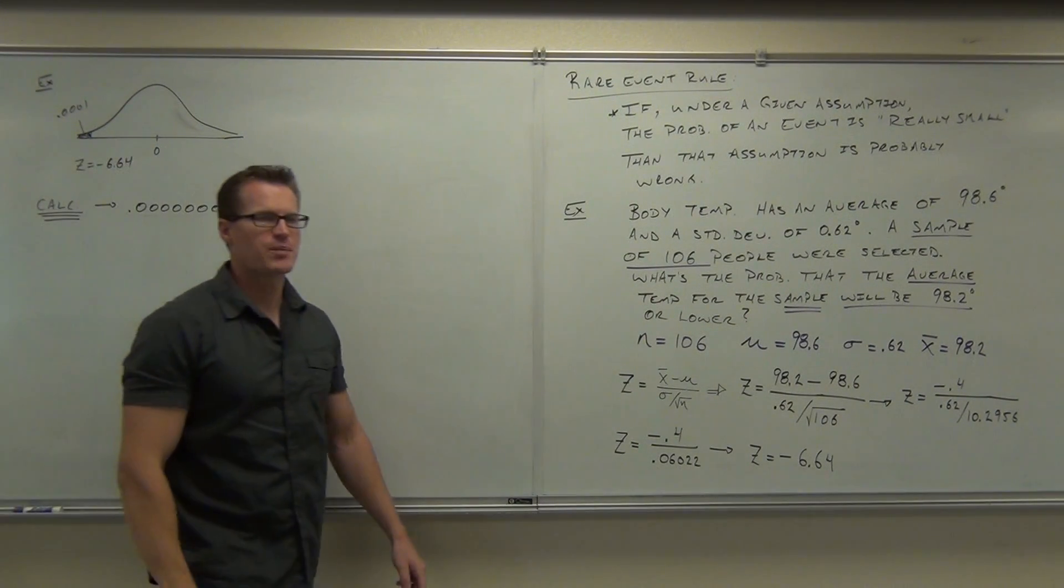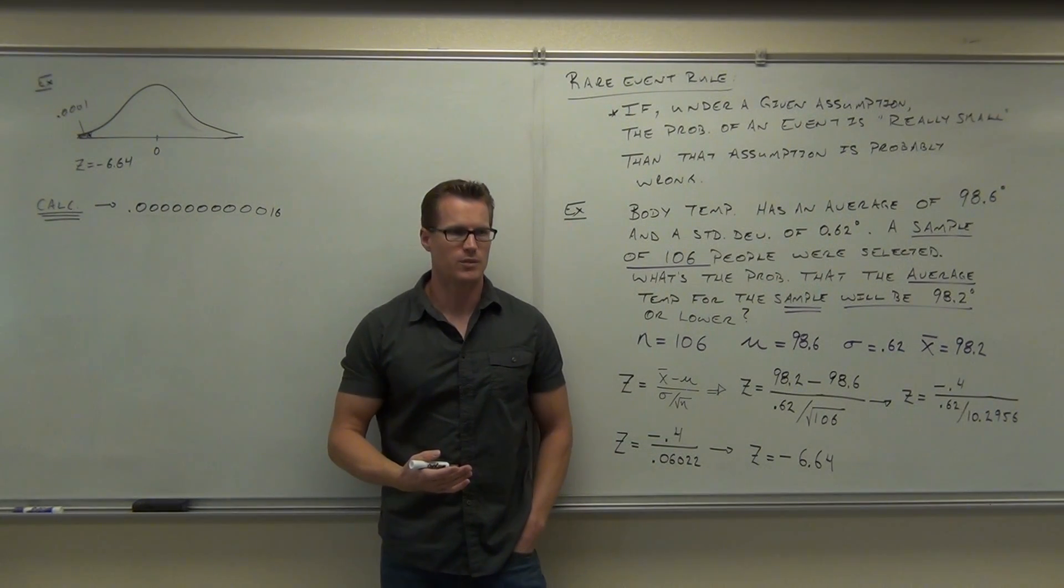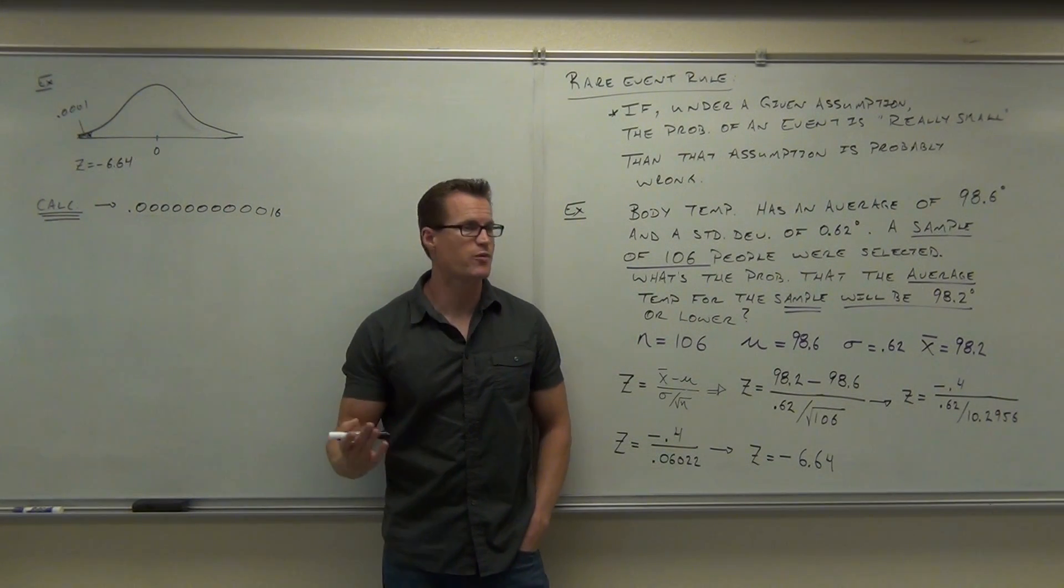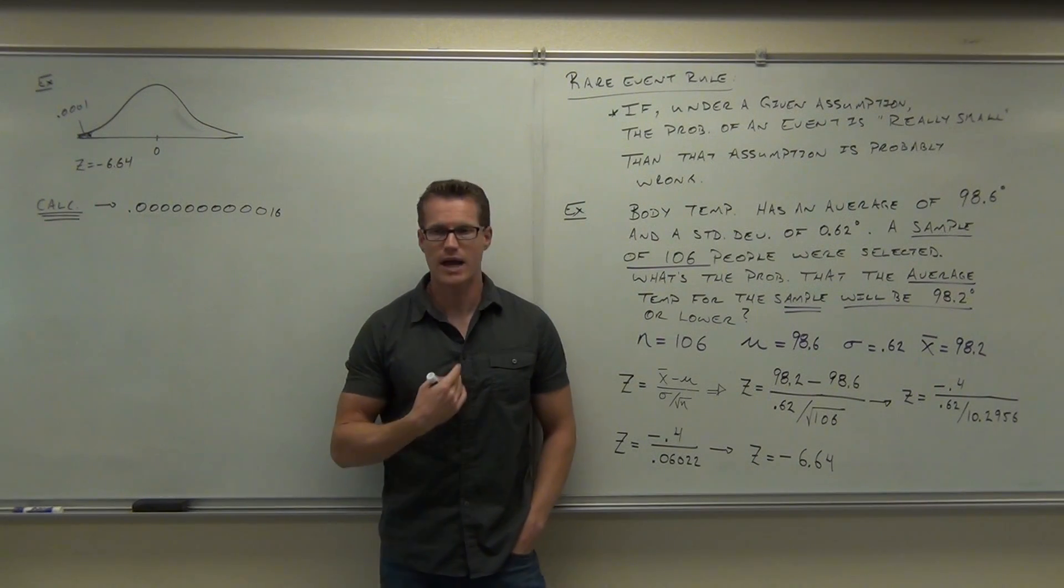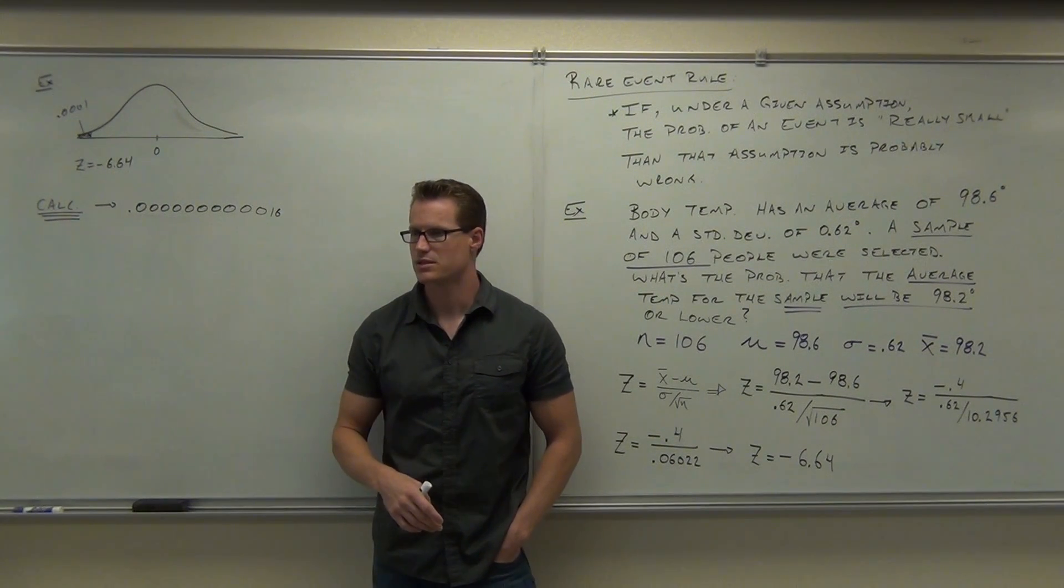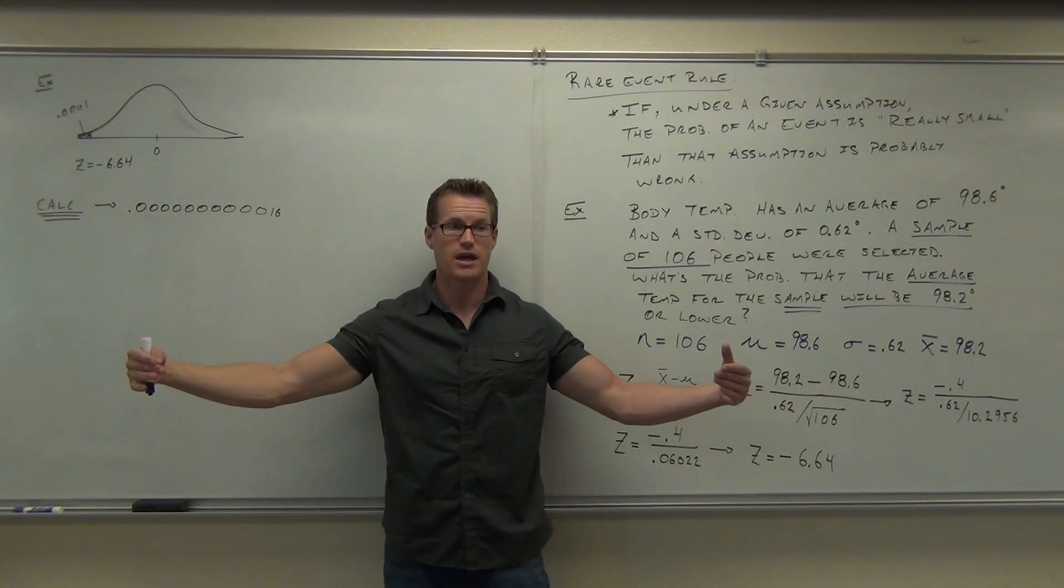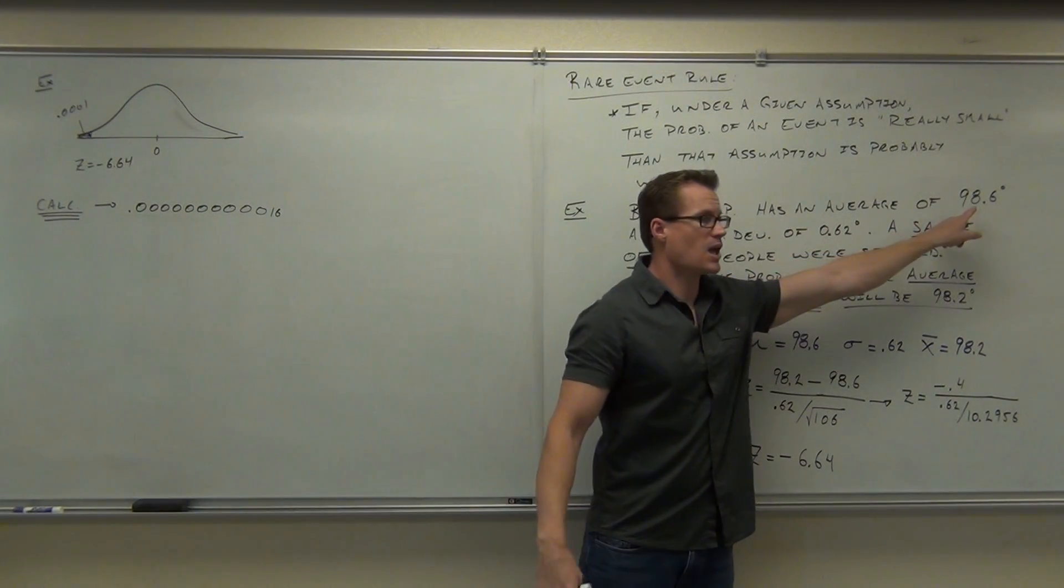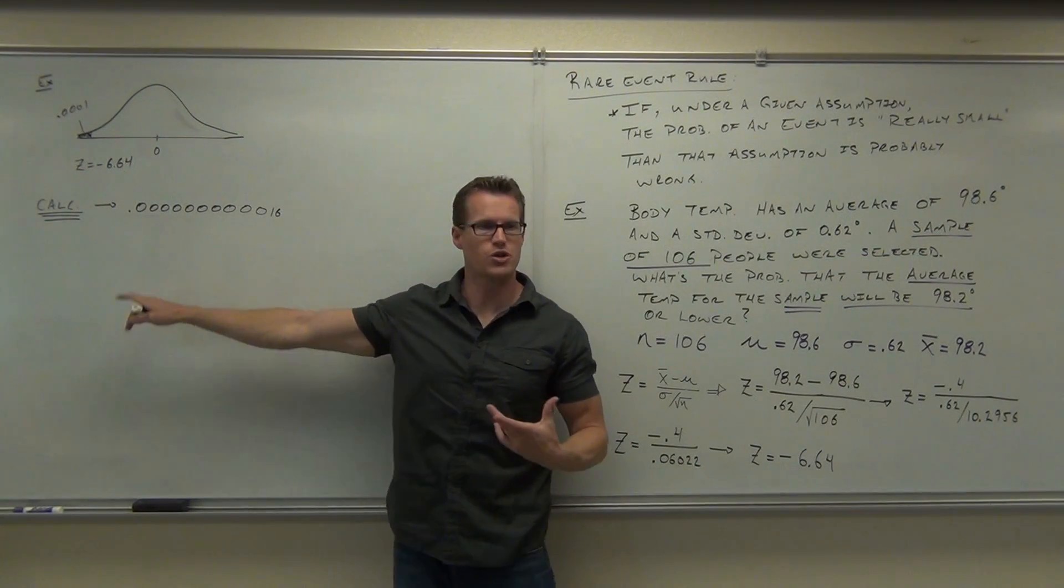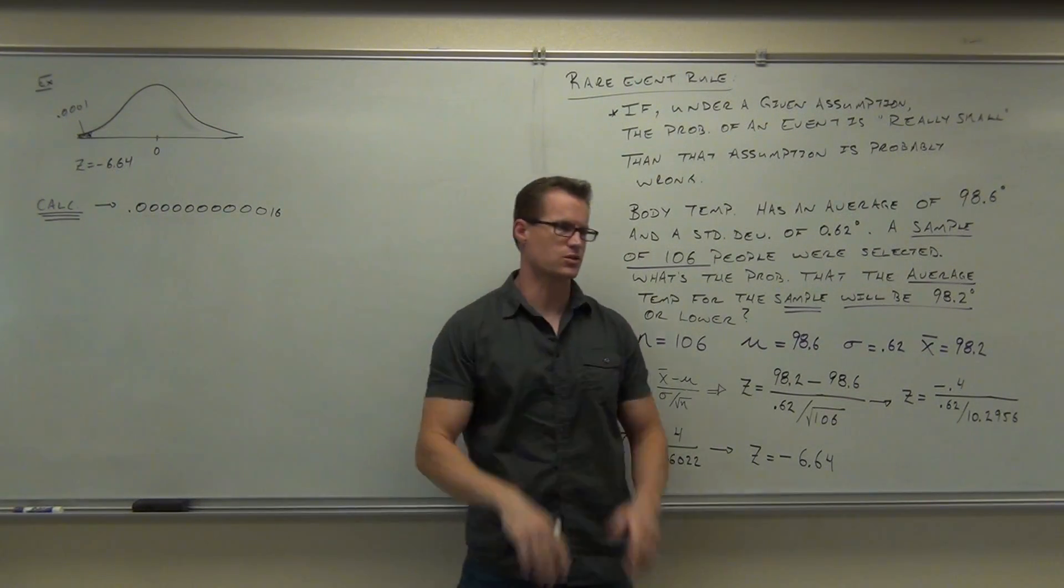Why is it so rare? Look at your sample size. How many people are you selecting? That's a lot of people, right? That's a large sample size. So yeah, maybe some of them are going to be less than 98.2. I am, but you're not, and probably you guys aren't. You're going to be right around 98.6 or higher than that. So, averaged out together, if there's 106 of us, it's going to be really, really close to this. And if it's not, it's really rare that it's not. That's what you're showing here.